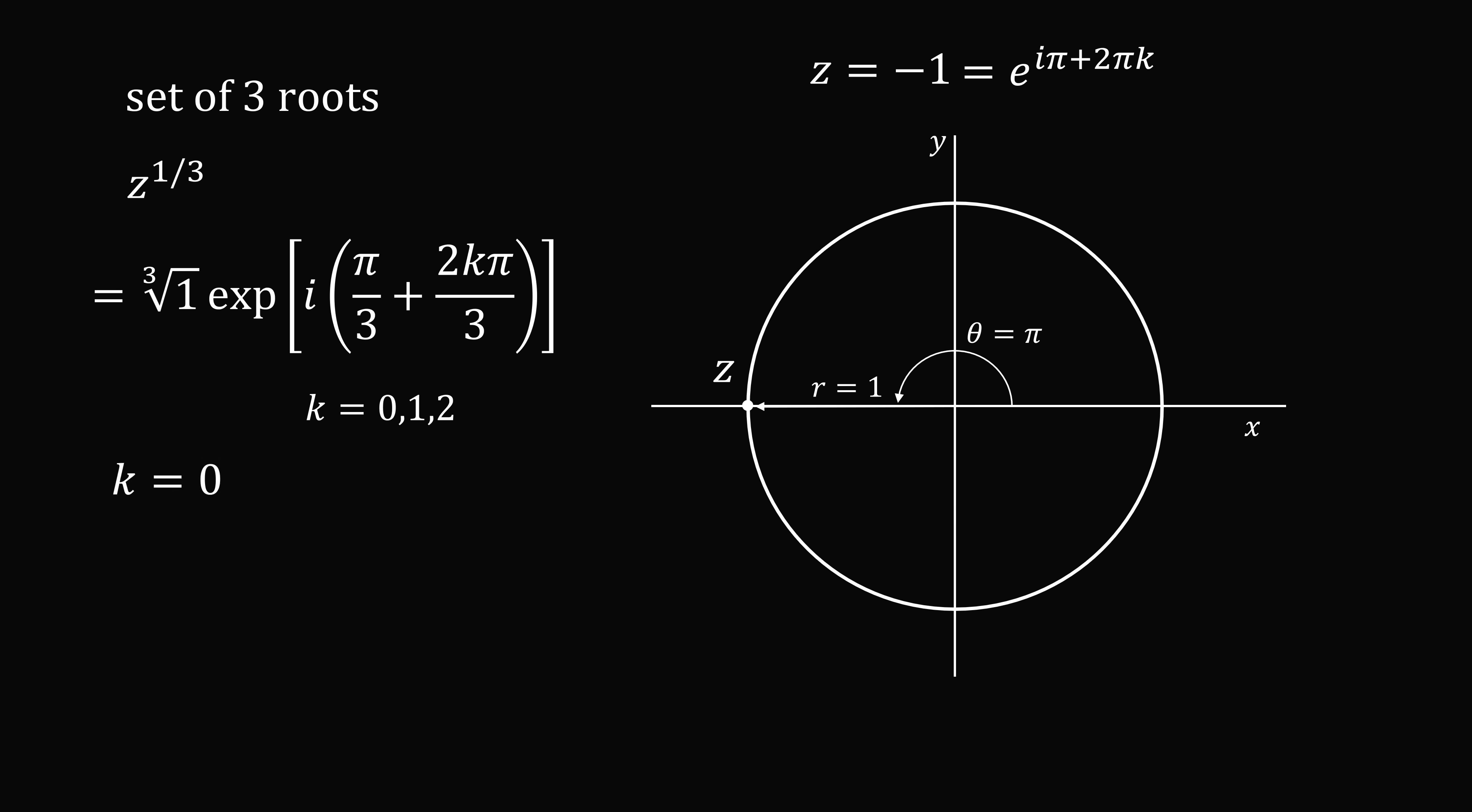So if we set k is equal to 0, we get the principal root, which is e to the power of i pi over 3, which equals 1 half plus i root 3 over 2. And this is exactly what Wolfram Alpha was outputting as the principal value of negative 1 to the power of 1 over 3.